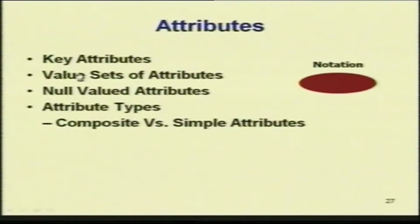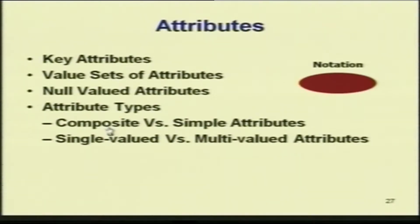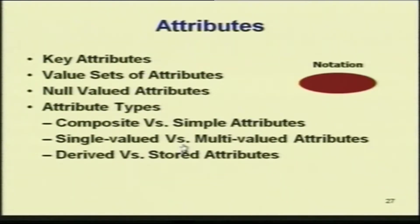When you talk about attributes, there are different perspectives of how an attribute will look. You have key attributes, you have value sets of attributes, you have null valued attributes, and you have composite versus simple, single valued versus multivalued, and derived versus stored. Let us look at all these in detail.